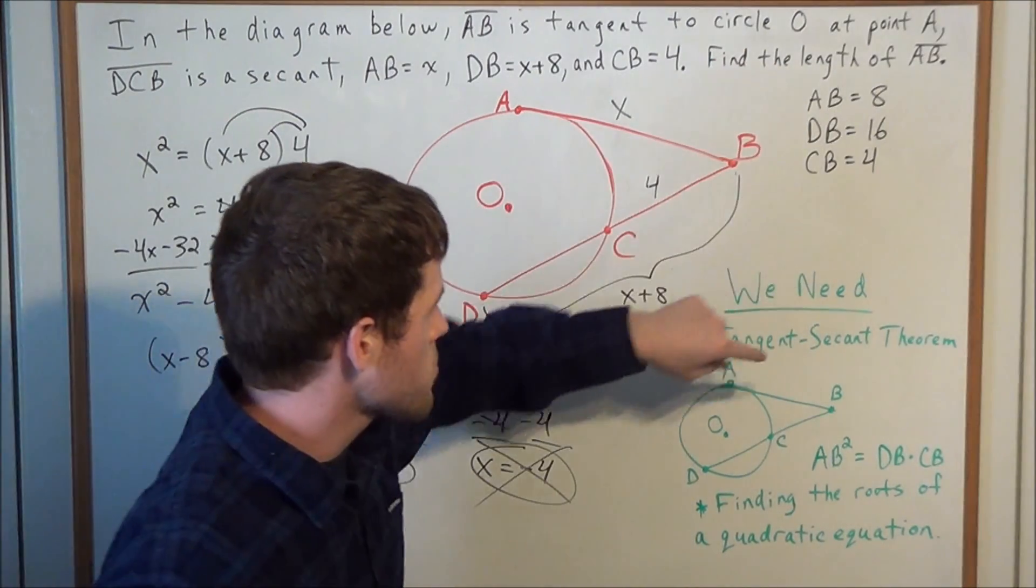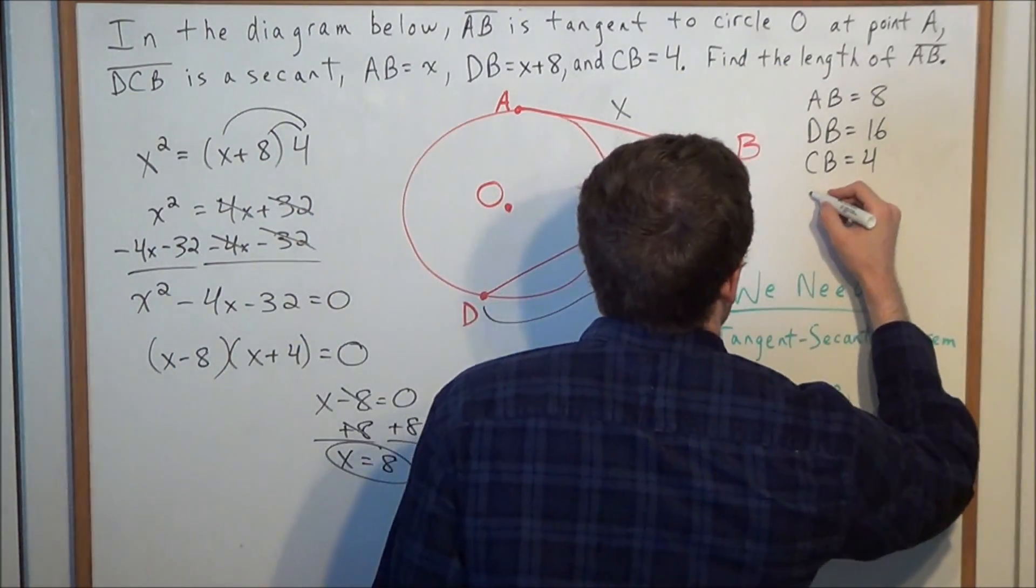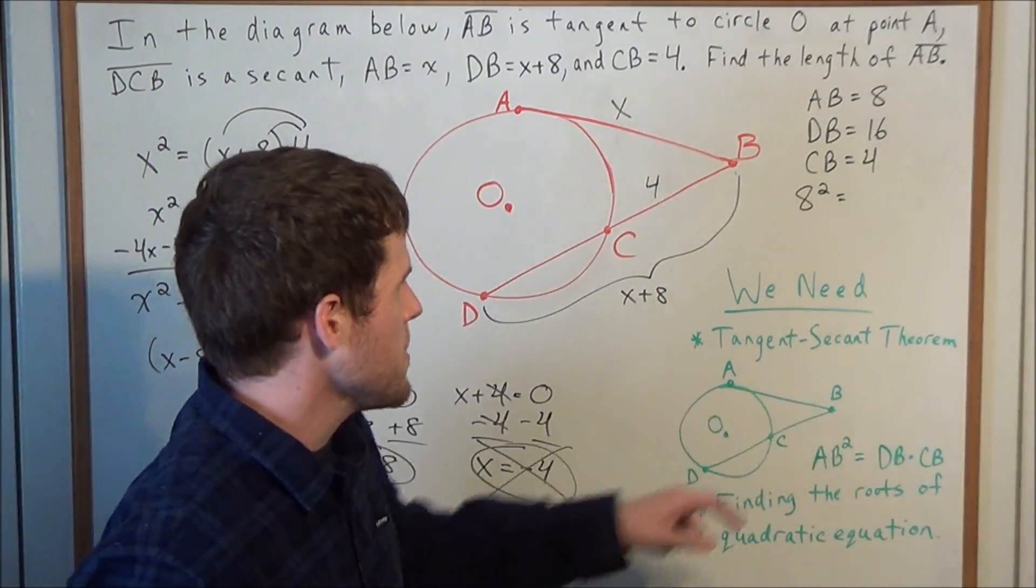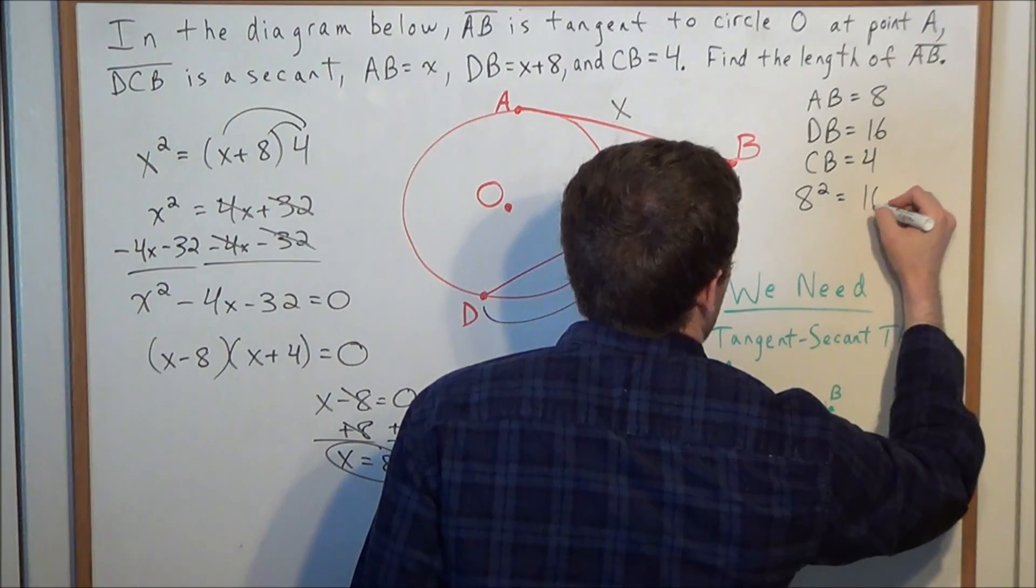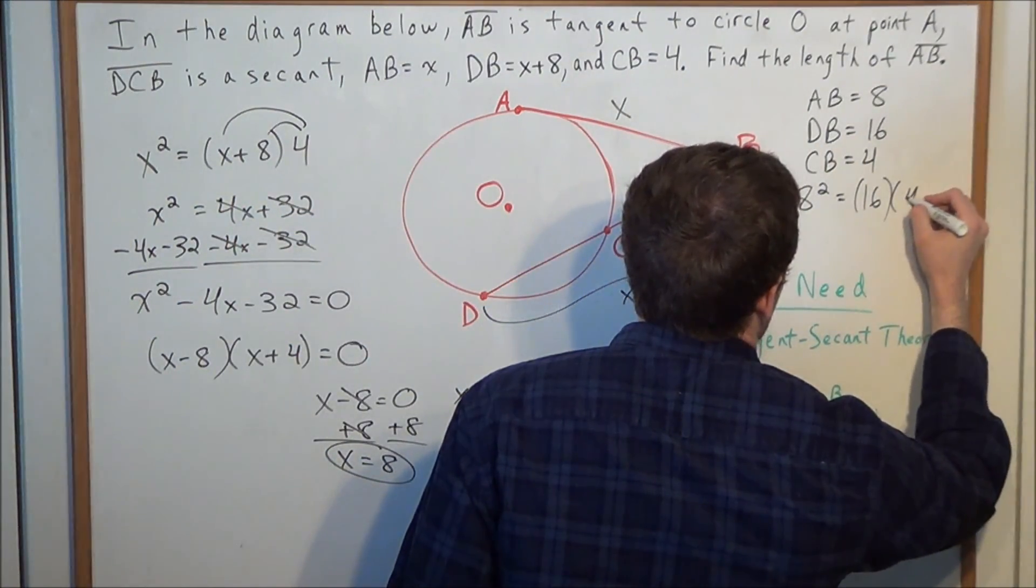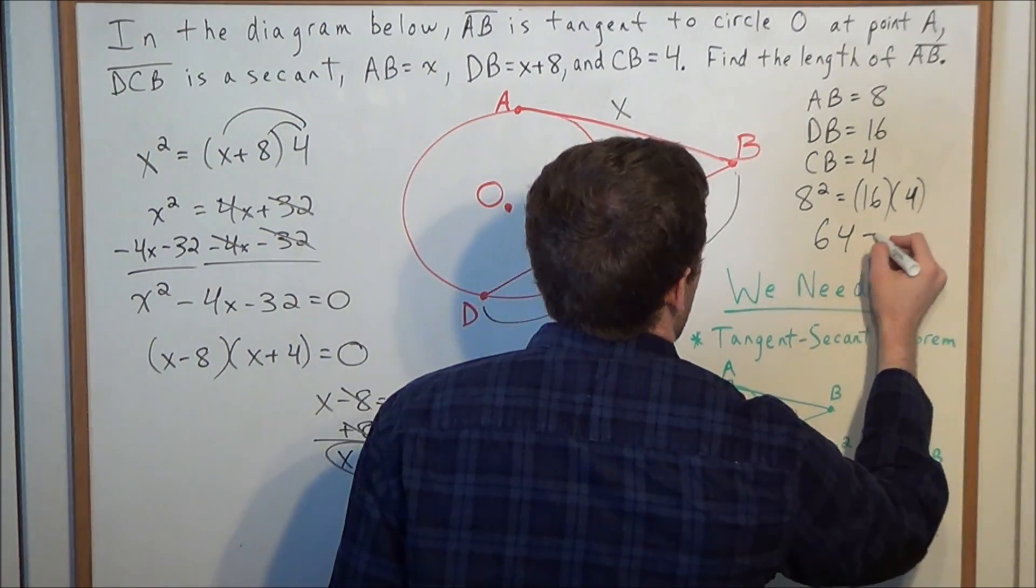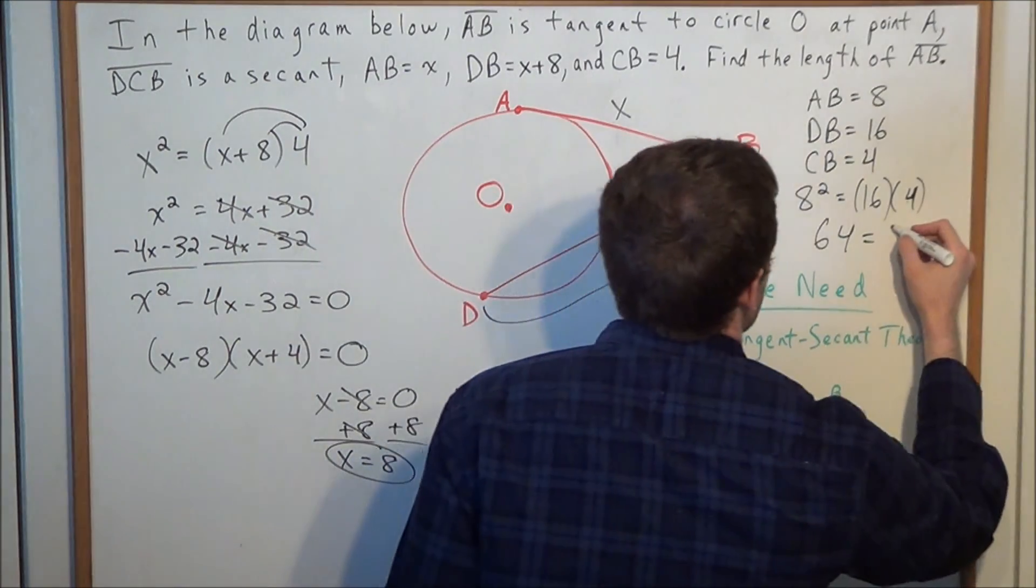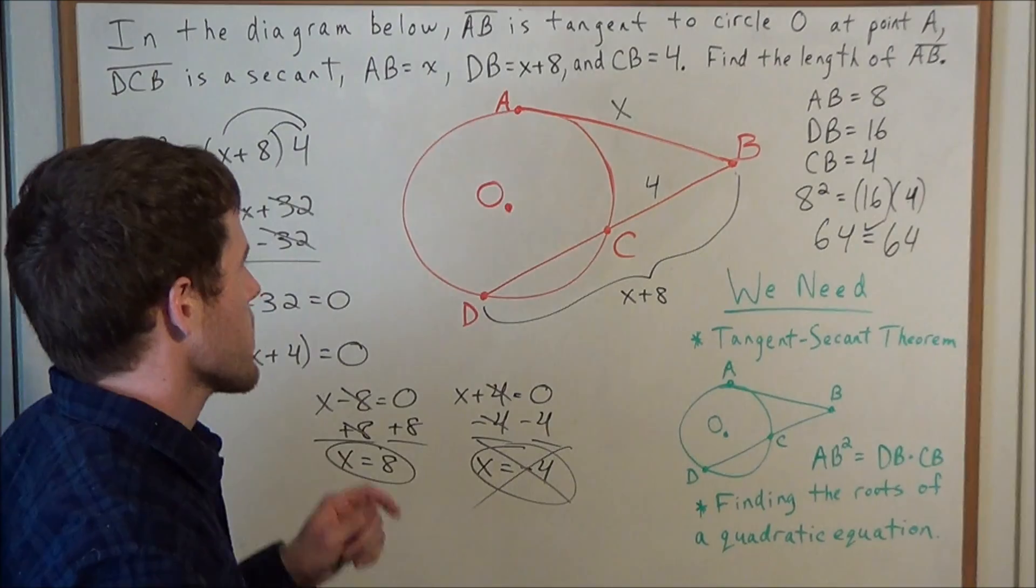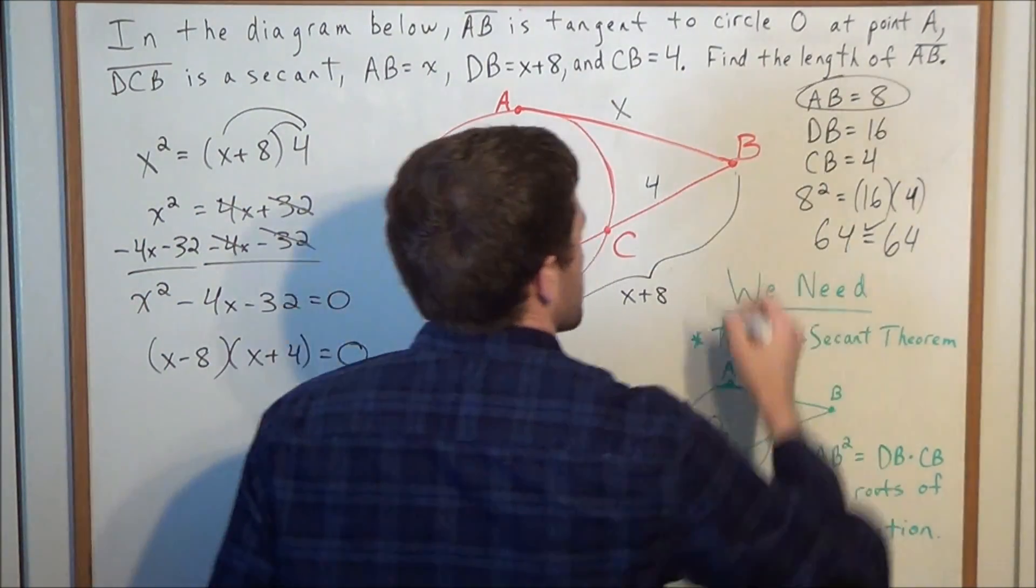So now we can substitute these values back into the tangent secant theorem, and we have AB squared. So we're looking at 8 squared is equal to DB, which is 16, times CB, which is 4. So now we have 8 squared is 64, and 16 times 4 is also 64. So we know for sure that this value of X checks out, so the length of line segment AB is equal to 8.